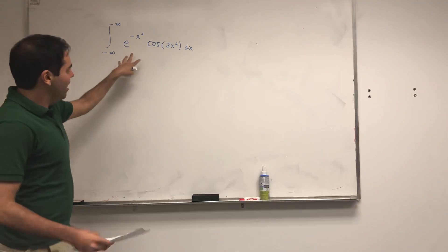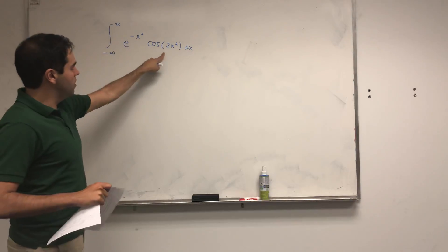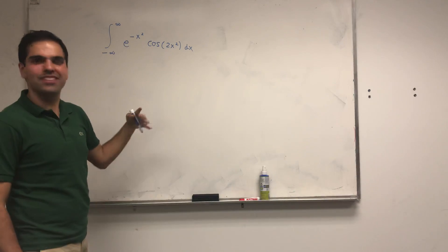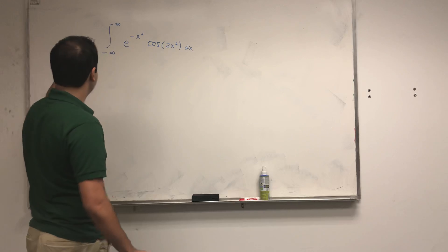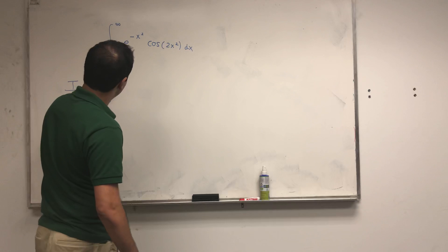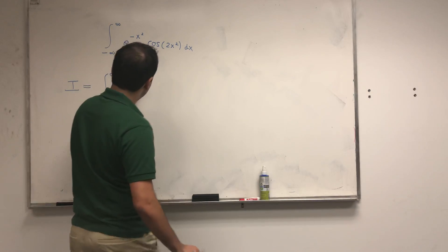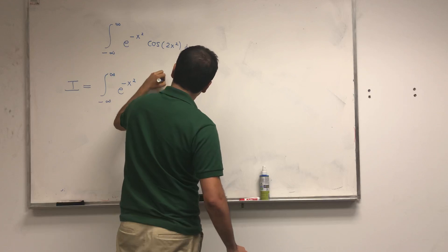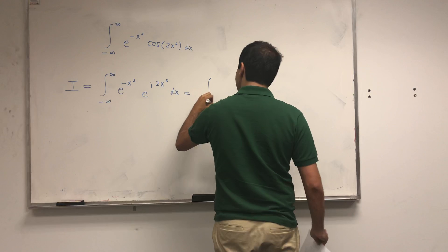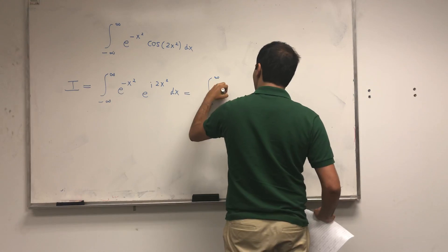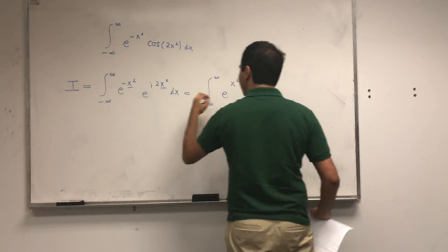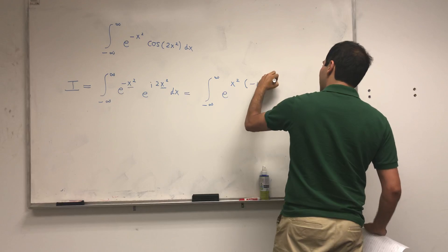And so, because we want to transform this cosine to exponential terms that look alike, instead of considering this integral, let's consider the same thing but with the complex version: e to the minus x squared times e to the i·2x squared dx, which becomes the integral from minus infinity to infinity of e to the x squared times minus 1 plus 2i, dx.